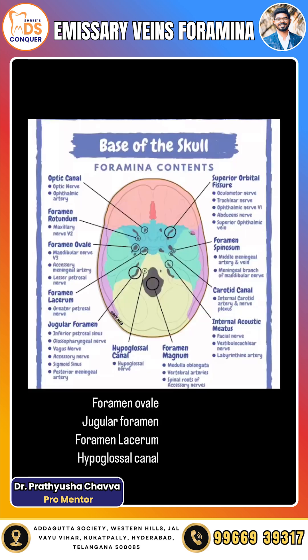Coming to the base of the skull, the other foramina which transmit the emissary veins are: foramen ovale, jugular foramen, foramen lacerum, and hypoglossal canal.